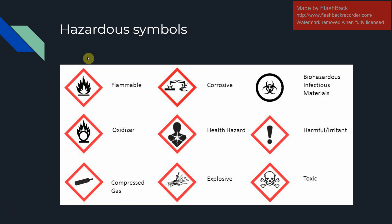To start, we have the flammable symbol, which is simply a flame. The corrosive symbol has changed from before — it used to be just the hand, but now we have two test tubes, one going on the hand and the other on the surface. The radioactive symbol symbolizes biohazardous infectious materials. The O that is up in flames represents oxidizer. This one's particularly dangerous because it means that in the presence of oxygen, this material will combust — you're probably not going to deal with it, but it is very good to know.